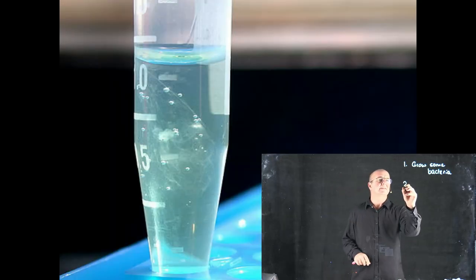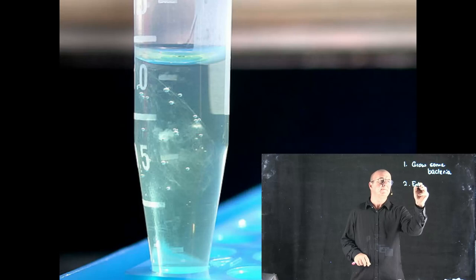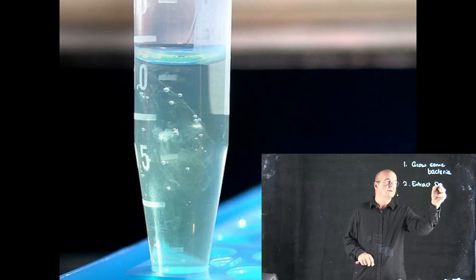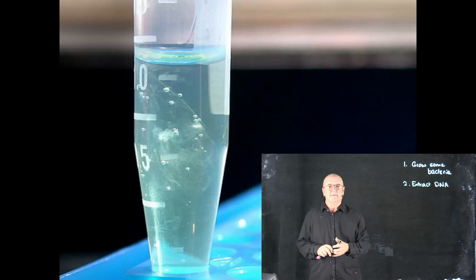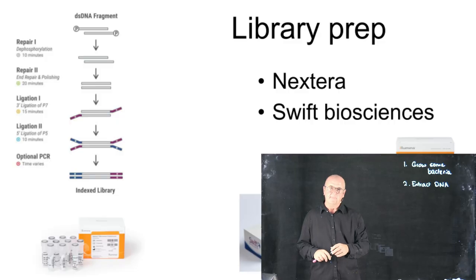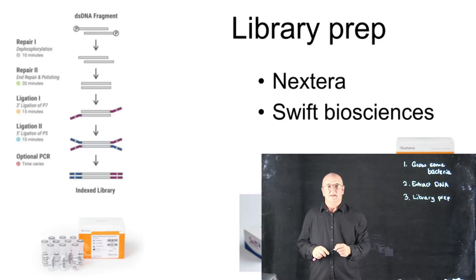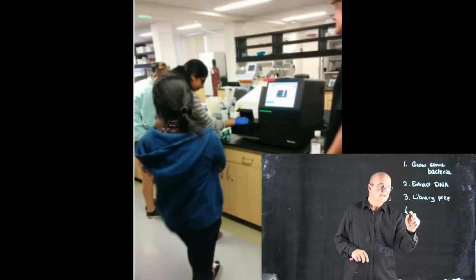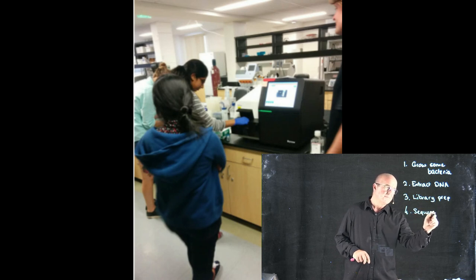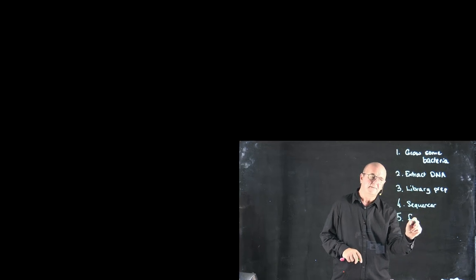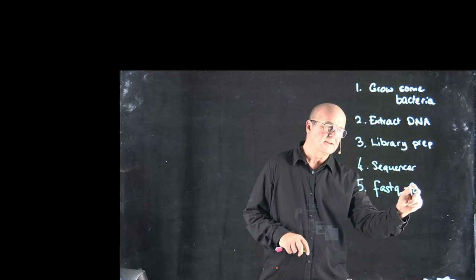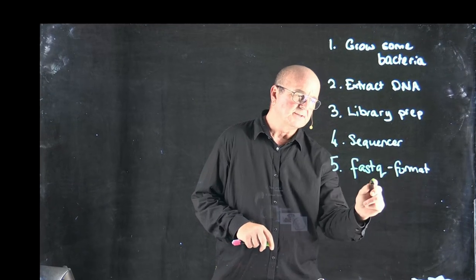The next step is we extract the DNA. I'm not going to talk about exactly how we do that, but we end up with a clear solution like the one I've shown here that contains DNA. We do a library prep step, as I've talked about in other sections, and then we run the DNA sequencer. That gives us a file of fastq format DNA sequences.